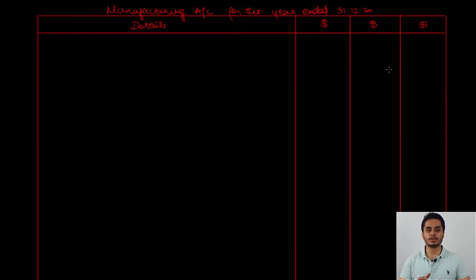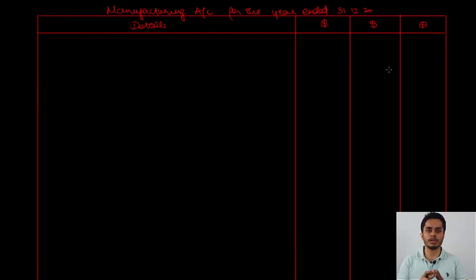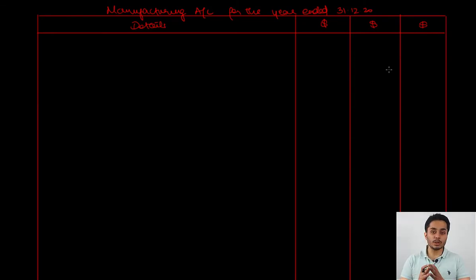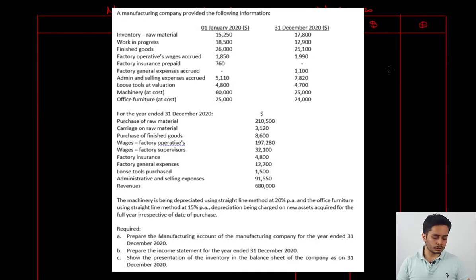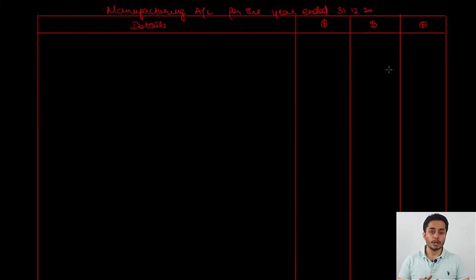Our manufacturing account begins with the calculation of prime cost. For prime cost we need direct material consumed, direct labor, and direct expenses. To arrive at the direct materials consumed, I will start with the opening inventory of raw materials, add the purchases of raw materials, add the carriage on raw materials, and deduct the closing balance of raw material at the end of the year.